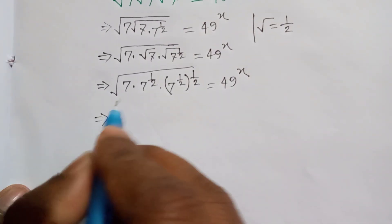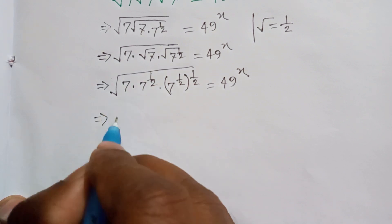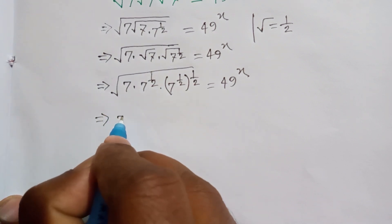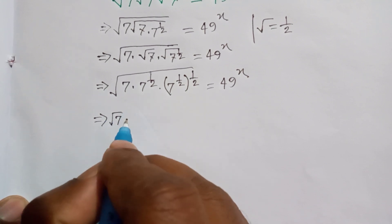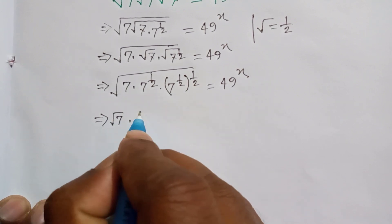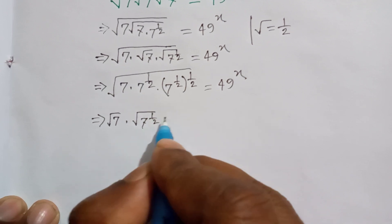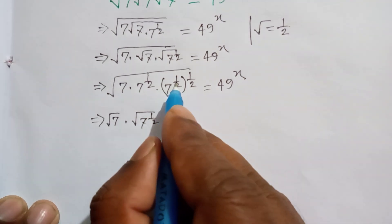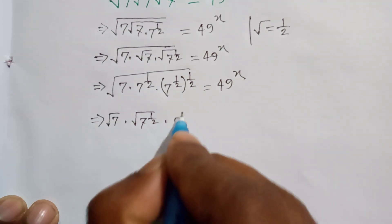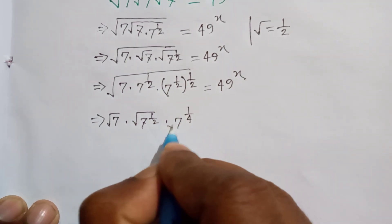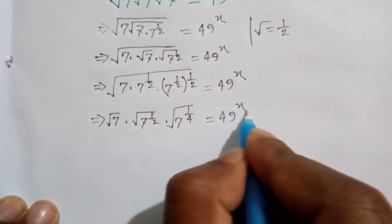Now we will break this square root, so seven can be written as a square root of seven times a square root of seven, to the power one by two, times a square root of seven to the power one by two, times this and this multiply seven to the power one by four. This square root is equal to 49 to the power x.